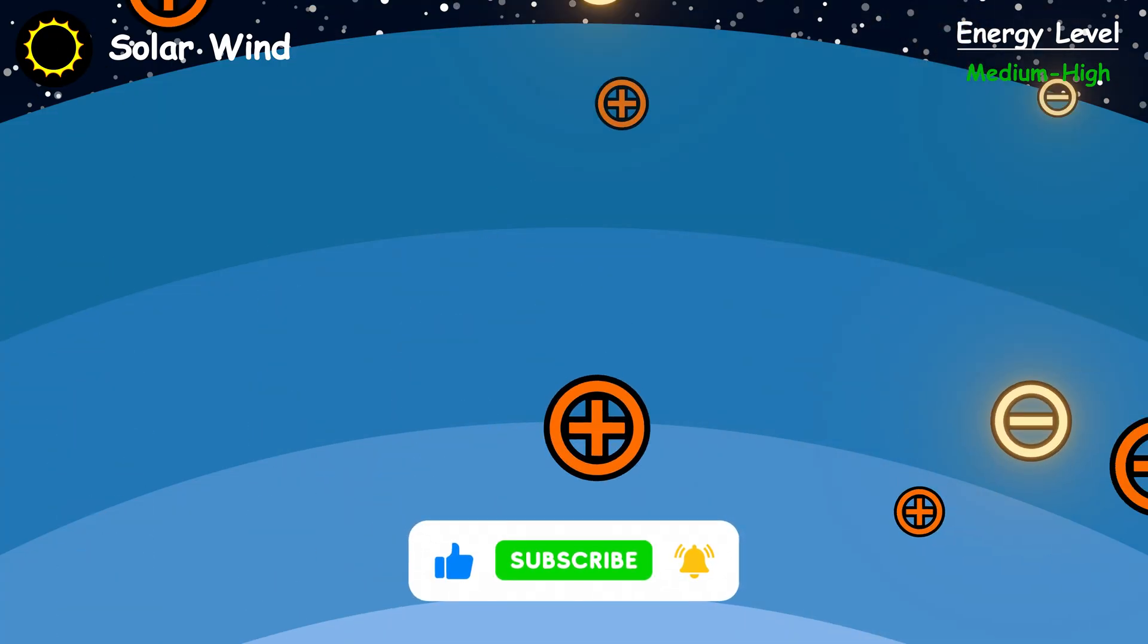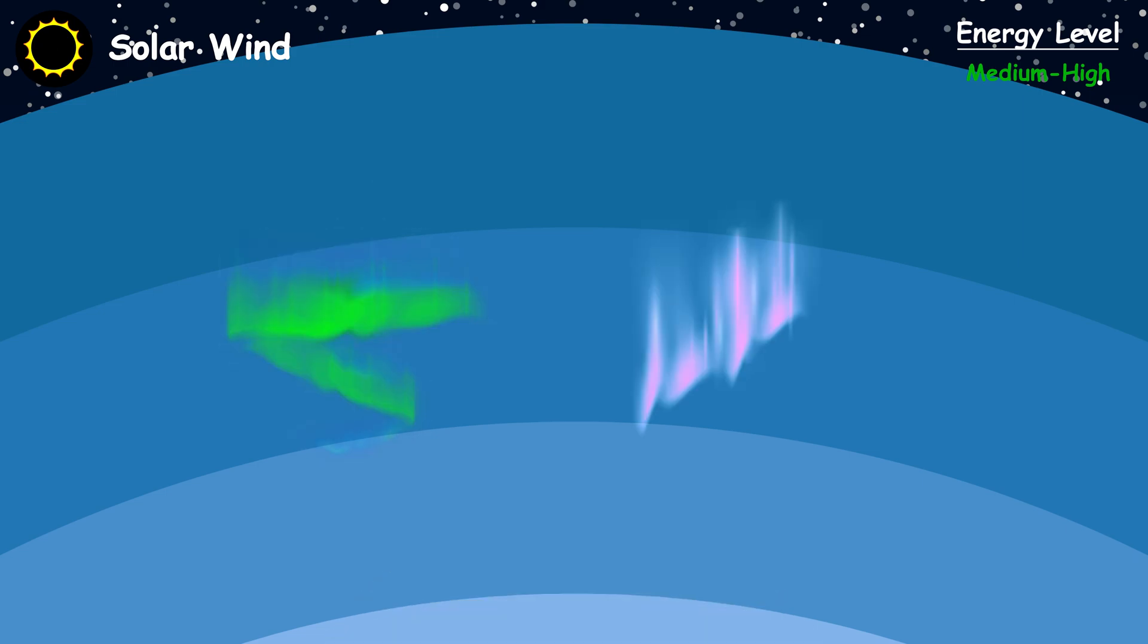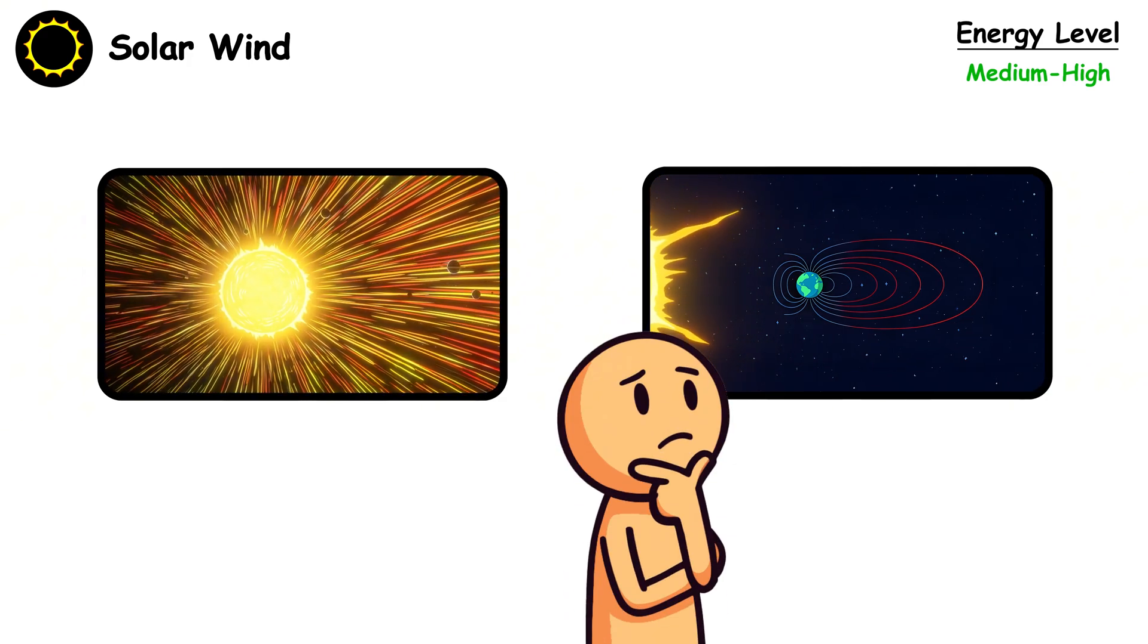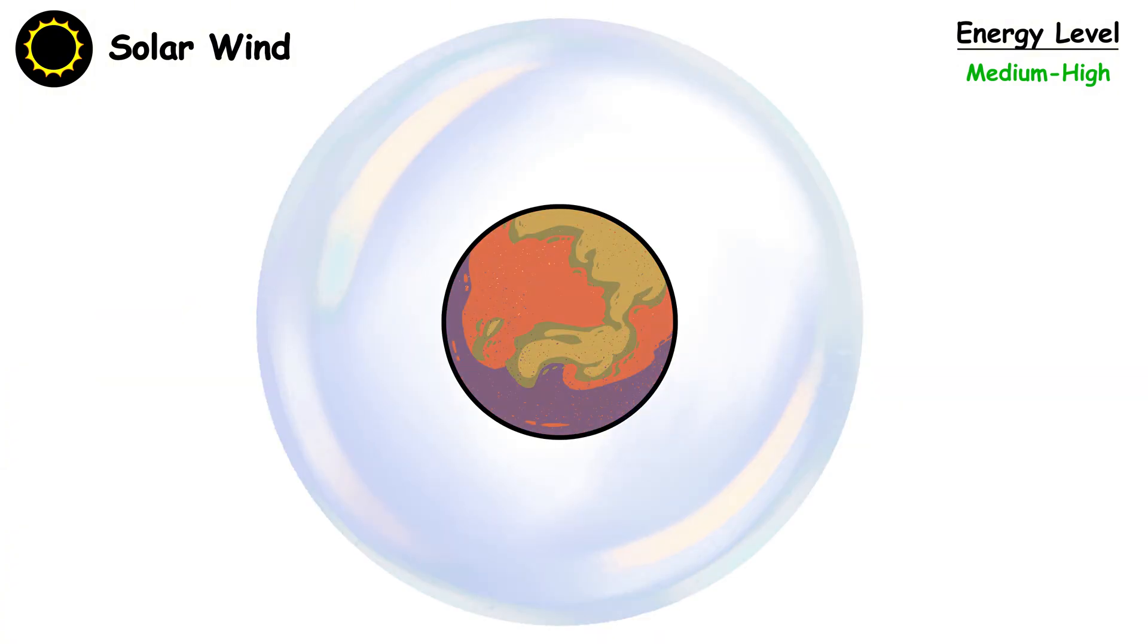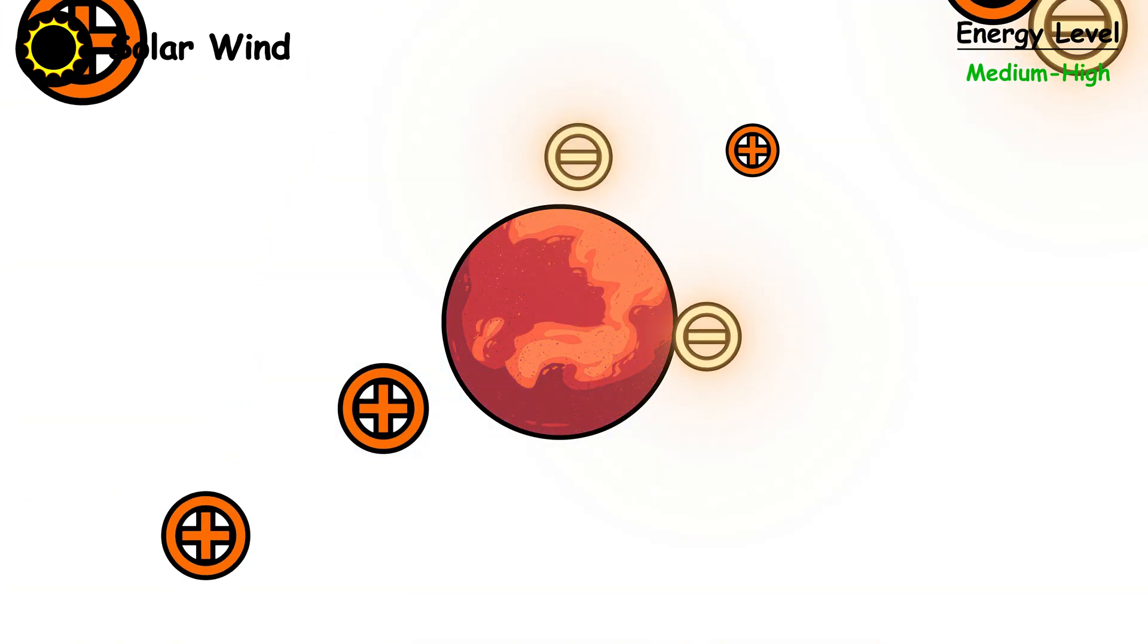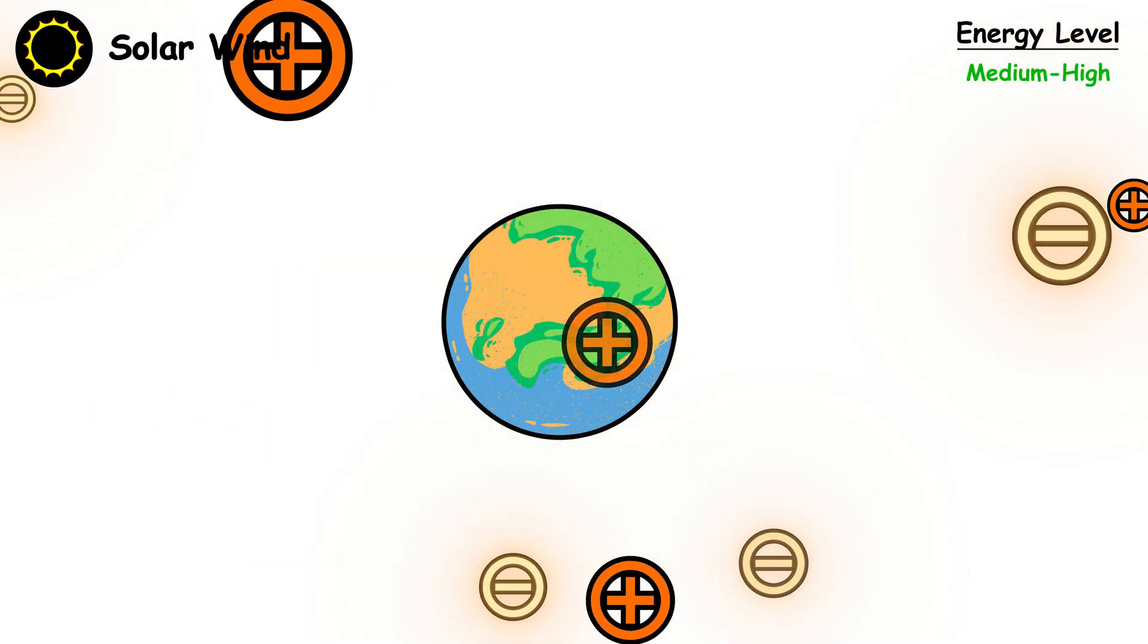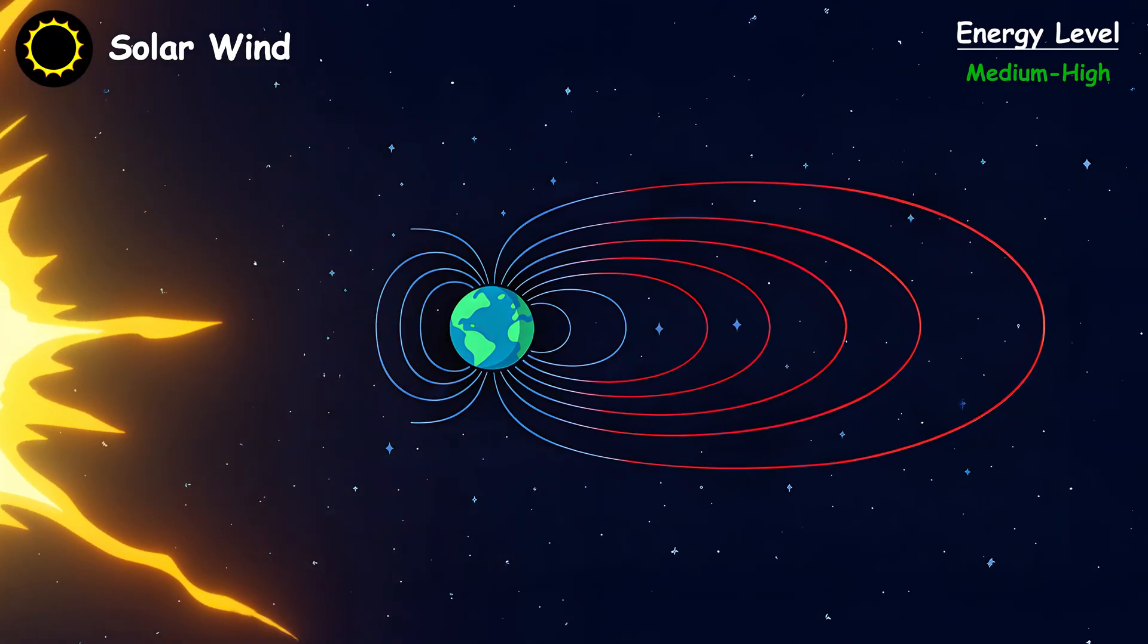When these energetic particles collide with atmospheric gases, they create the polar lights, nature's most spectacular light show. This particle stream would strip away Earth's atmosphere over millions of years without magnetic field protection. Mars lost most of its atmosphere this way after its magnetic field died billions of years ago. The continuous particle bombardment literally blew Martian air into space, transforming a once-wet planet into a cold desert.